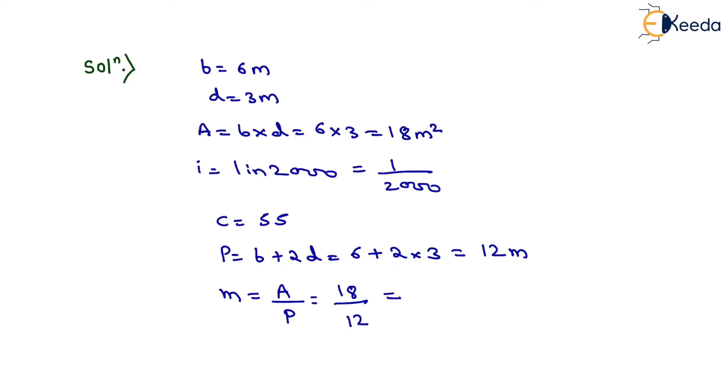Therefore, hydraulic mean depth will be equals to 1.5 meters. Now velocity of flow will be given as V equals to C under root MI. Now we have to put the value of C, M, and I here, that is 55 under root of 1.5 into 1 by 2000. On solving this, we will have the value of V equals to 1.506 meter per second.